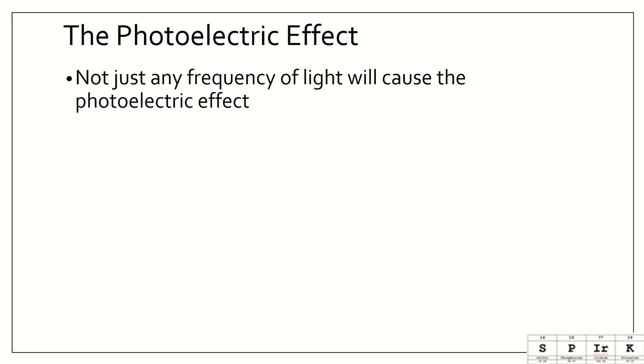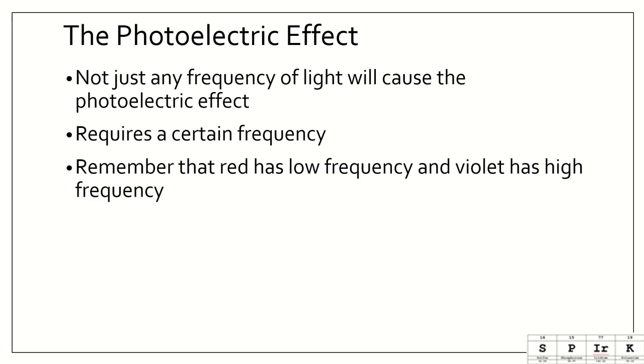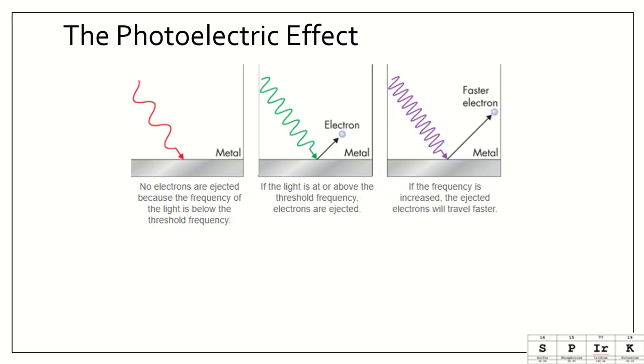It doesn't just take any frequency of light will cause the photoelectric effect. It requires a certain frequency. When we want to think about this, we want to think that red has low frequency and violet has much higher frequency. This is why UV light, or black lights, can cause things to light up. Looking at the photoelectric effect, you see here we have red light coming in to hit this metal, and nothing's happening. No electrons are ejected because the frequency of light is below the threshold frequency, or the frequency that that metal requires to emit an electron. So, we move up the spectrum. Let's try green light. We see that if the light is at or above the threshold frequency, electrons are ejected. Here we have one electron ejected. And if the frequency is increased, the ejected electrons will travel faster. We see those electrons jumping away much quicker.